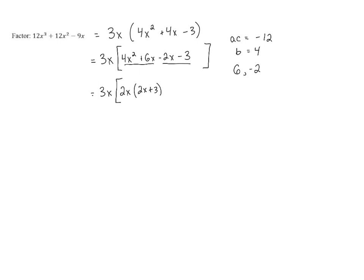If you look at the second group, they're both divisible by 1, but here we notice we're going to want to pull out a negative 1 so that we're left with positive leftovers, 2x plus 3.